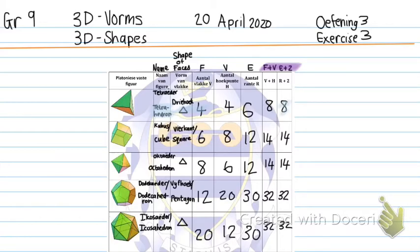The next one is a cube. Please ignore the Afrikaans. The cube's faces are square. It has six faces, eight vertices, and 12 edges. When I add faces plus vertices I get 14, and edges plus two also gives 14.